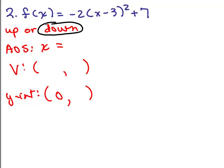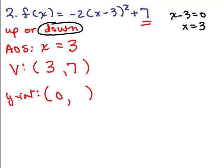Axis of symmetry: it's easy to pick out this time because if you take x minus 3 and set it equal to 0, that gives you x equals 3. So the equation of the axis of symmetry is x equals 3, and that's the number that goes in for the vertex. If it's in this form, the number over here will be the y value, which is 7. If you forget that, you just plug in 3 for x into the equation, and that gives you negative 2 times 0, so you get 0 plus 7, or 7 for the y value.